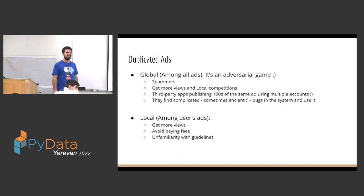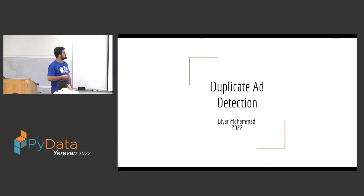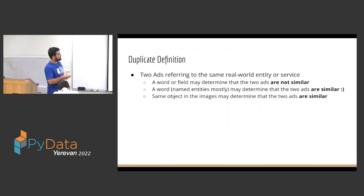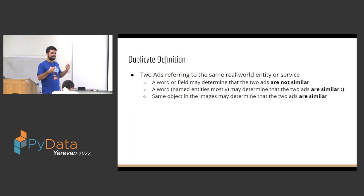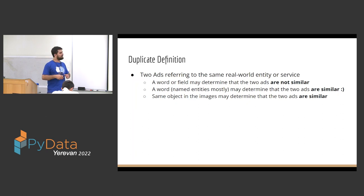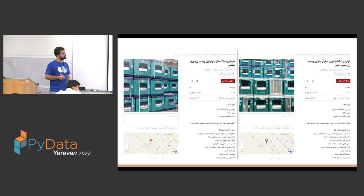A final comment noted an interesting edge case: in the real estate category, the same property is often posted by multiple agencies, so many ads refer to the same real-world entity but are allowed. The speaker acknowledged this is a known exception where their duplicate definition doesn't fully apply, and it's an evolving problem partly influenced by government regulators.